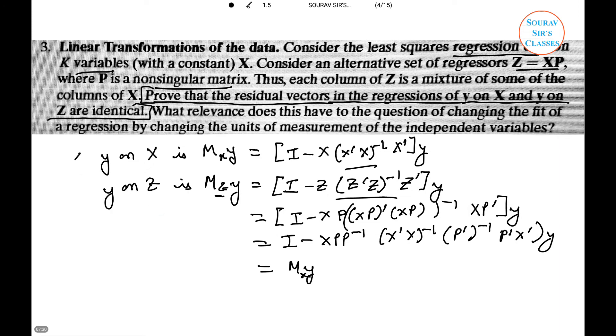Since the residual vectors are identical, the fits must be as well. Changing the units of measurement of the regression is equivalent to post-multiplying by a diagonal P matrix, which kth diagonal element is the scale factor to be applied to the kth variable. That is one if it is to be unchanged. It follows from the result above that this will not change the fit to the regression.